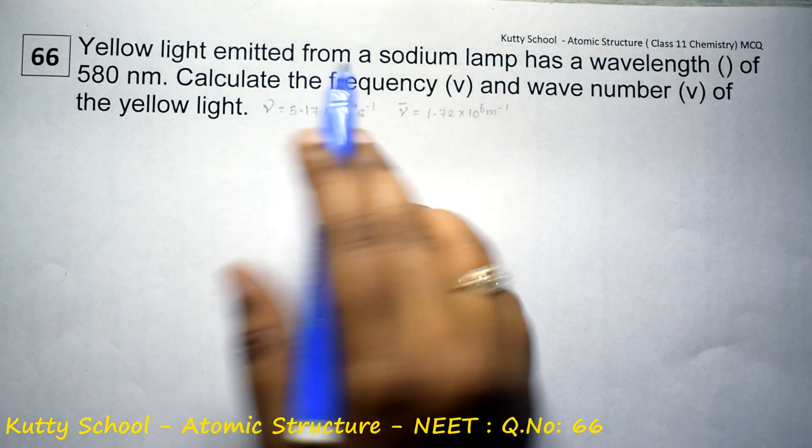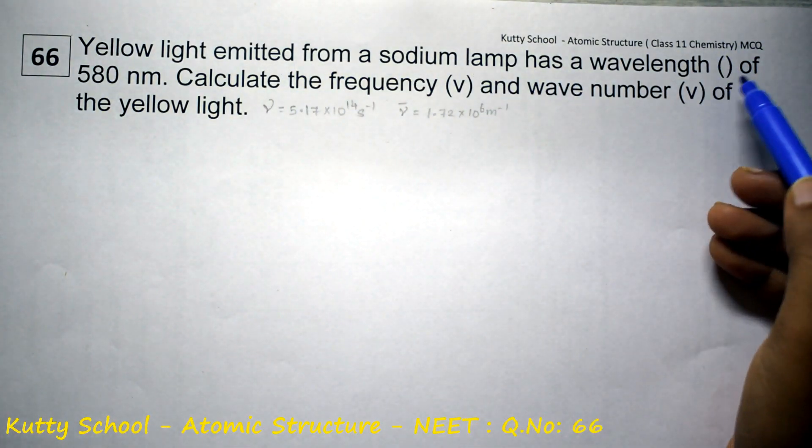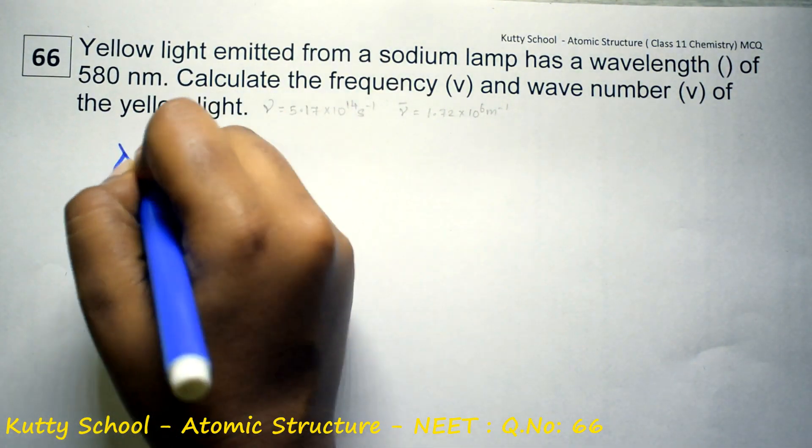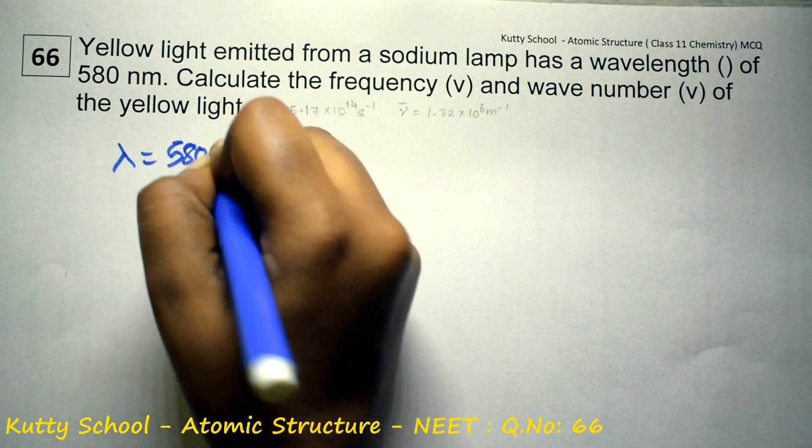Yellow light emitted from a sodium lamp has a wavelength of 580 nanometer. Lambda is equal to 580 nanometer.